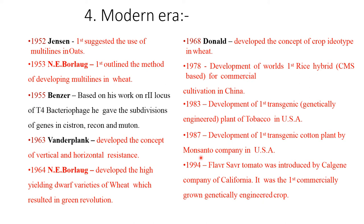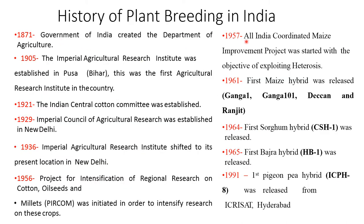Development of the first transgenic cotton plant by Monsanto Company in the USA was achieved in 1987. The Flavr Savr tomato was introduced by Calgene Company of California — it was the first commercially grown genetically engineered crop. The Government of India created the Department of Agriculture in 1871.